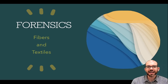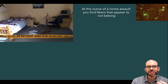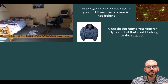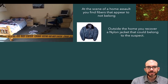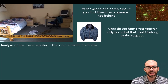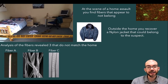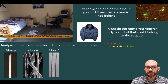This lesson is an introduction into fiber and textile evidence in forensic science. Let's say you're at the scene of a home assault, and you find fibers that do not belong to any of the items discovered in the home. You also discover a nylon jacket outside the home that you believe belongs to the subject. By analyzing these fibers, you notice that three do not match any of the fibers discovered in the victim's home — fiber A, fiber B, and fiber C. As a forensic investigator, can you identify what these fibers are and determine if any of them match the nylon jacket you discovered?